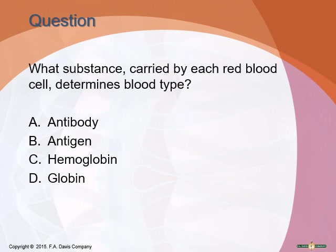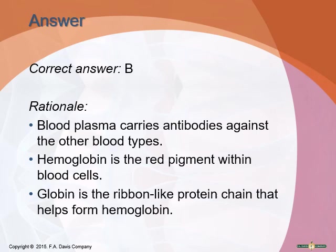Final quiz question: what substance carried by each red blood cell determines your blood type? The answer is the antigen — what's present on your red blood cell determines your blood type. This concludes the lecture.